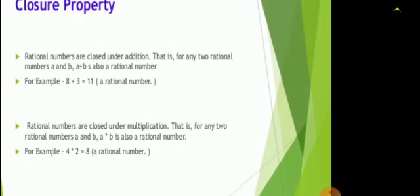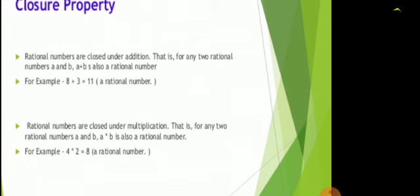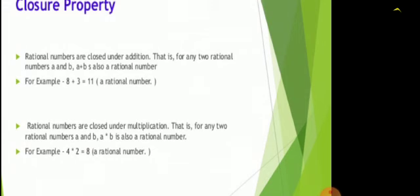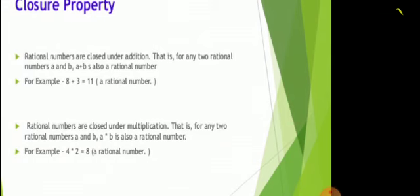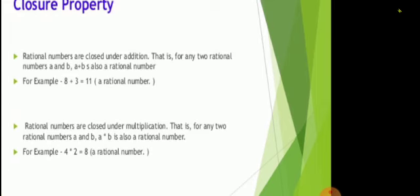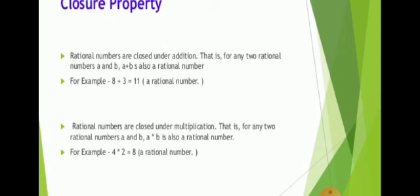Closure property. Now, we are talking about the properties of rational numbers. Rational numbers are closed under addition, that is for any two rational numbers a and b, a plus b is also a rational number. Rational numbers are closed under multiplication, that is for any two rational numbers a and b, a multiplied by b is also a rational number.